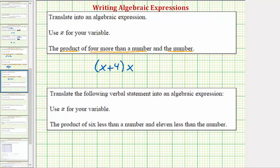Let's look at our second example. Here we have the product of six less than a number and eleven less than a number. So again, we have a product, so we're multiplying, and therefore we'll have two factors. The first factor is six less than a number, and the second factor is eleven less than the number.